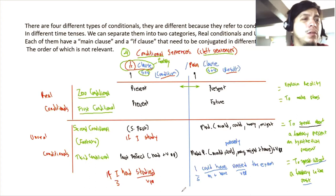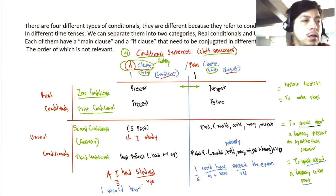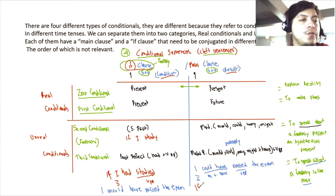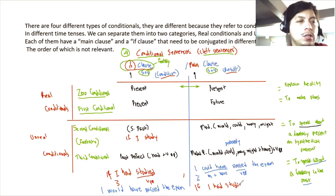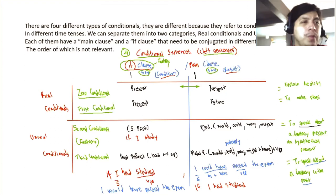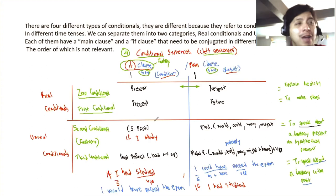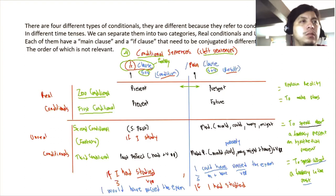To make a question in the third conditional, change the main clause. With a modal perfect, only the first part — the modal — switches position with the subject: 'If I had studied, could I have passed the exam?' Or: 'Would I have passed the exam if I had studied?' The if clause stays as it is; only the main clause changes for a question.